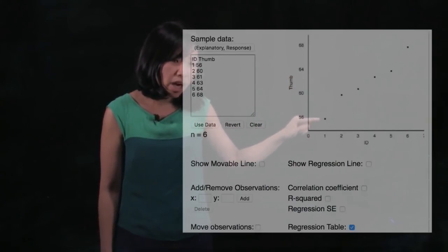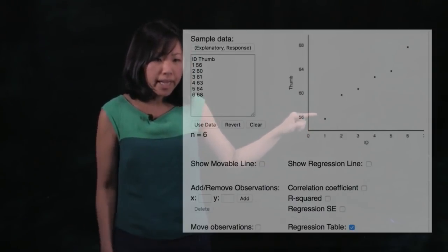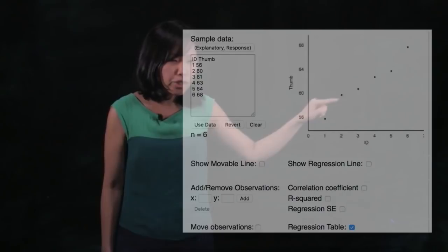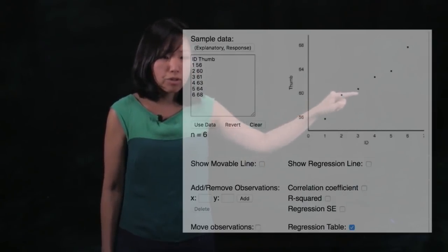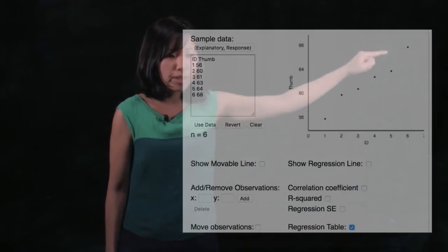And you could see this dot represents student one's thumb. And remember student one had 56 millimeter thumb. And so that's student one's thumb. Here's student two's thumb, and they're 60 millimeters, and student three, and student four, and so on and so forth.